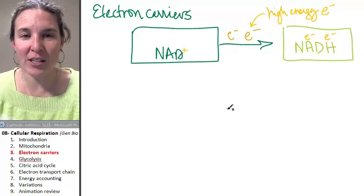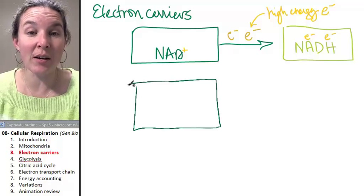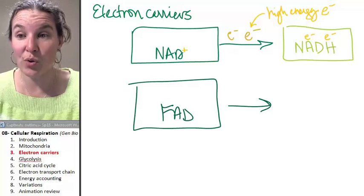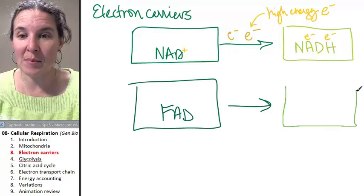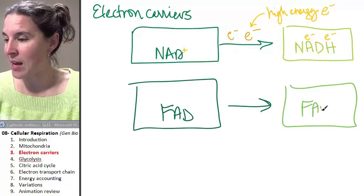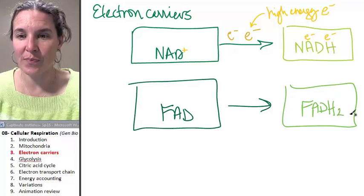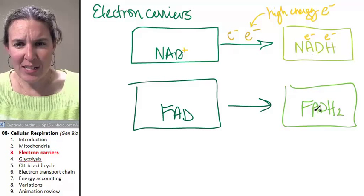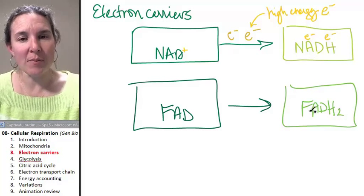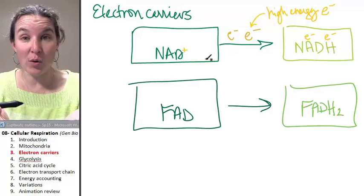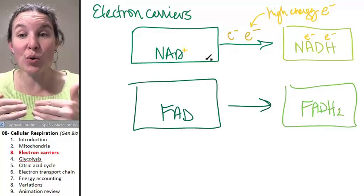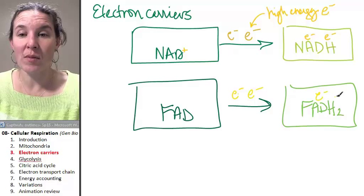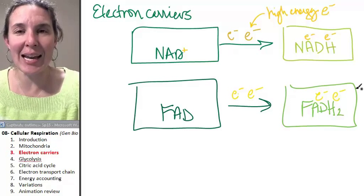There are multiple high energy electron carriers. There's another one called FAD, and FAD turns into FADH2 if it's carrying two high energy electrons. And again, the actual breakdown of the molecule itself is not as important to me as you knowing that two high energy electrons can be carried by this molecule, and those will come in handy in our whole process.